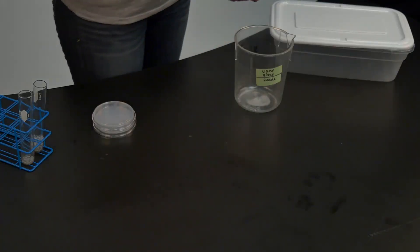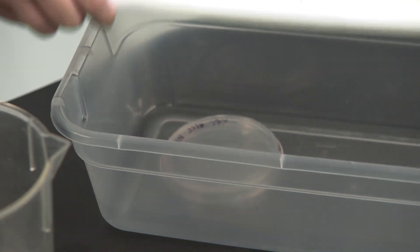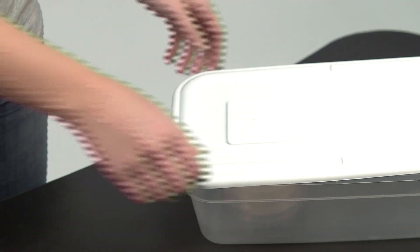Turn each of your plates upside down with the lid on the bottom and store them in your plastic storage container. The purpose for turning it upside down is to prevent the condensation on the lid of the plate from falling onto the agar where your bacteria are growing.